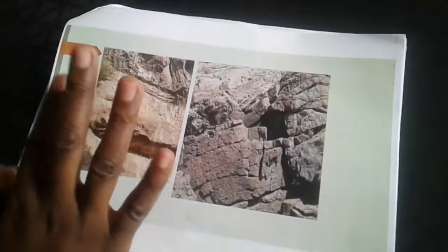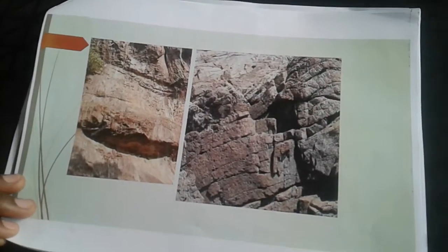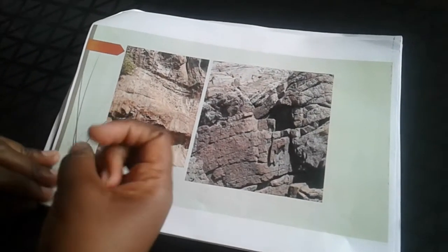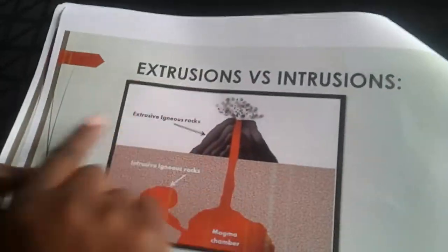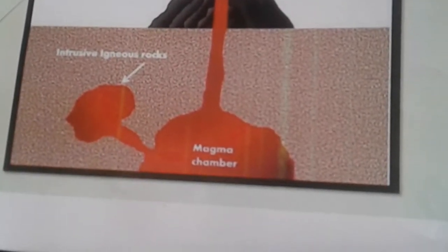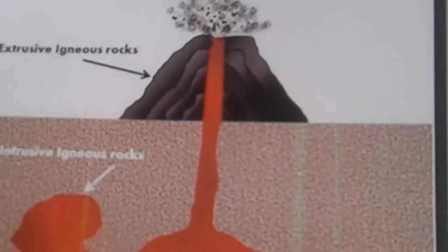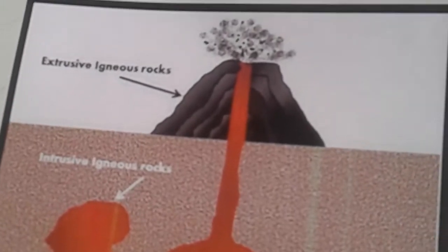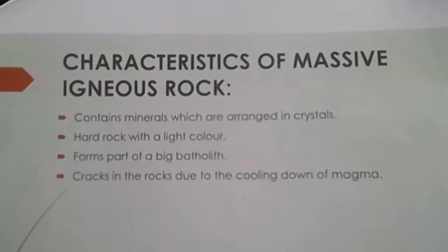Topography associated with igneous rocks — we are going to look at igneous intrusions, where we have magma solidifying underneath the surface, and the rocks are exposed at a later stage. With massive igneous rocks we have igneous extrusions and igneous intrusions. Intrusive igneous rocks form within the crust when magma solidifies and are later exposed to the earth's surface. Extrusive igneous rocks form when magma finds its way to the surface and solidifies there.